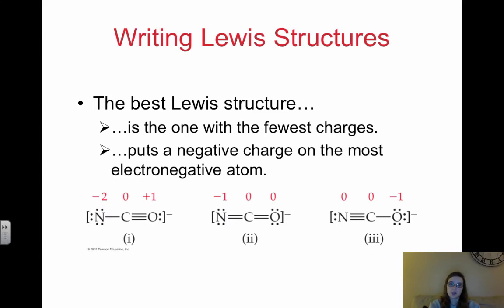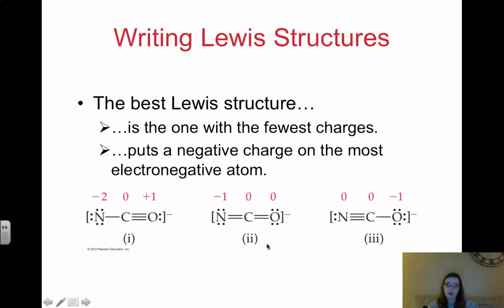To summarize: the best Lewis structure is the one with the fewest charges — the one with values closest to zero. Or, the best Lewis structure is the one that puts a negative charge on the most electronegative atom. For example, comparing structures 1, 2, and 3: we can ignore structure 1 right away because it has only one formal charge at zero while the others have two at zero. Looking at 2 and 3, both have 0, 0, and −1. The most electronegative atom between N and O is O, so structure 3 is the best representation of CNO — it has the fewest charges and the negative is on the most electronegative atom.